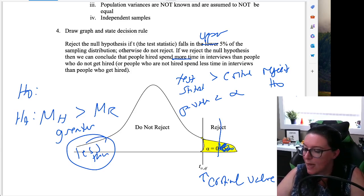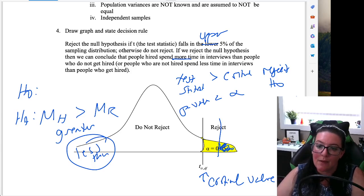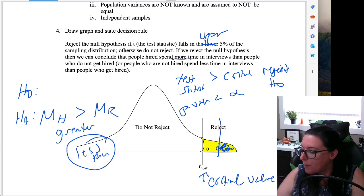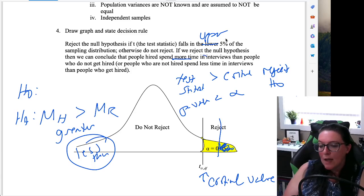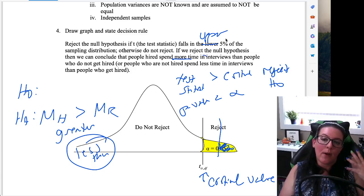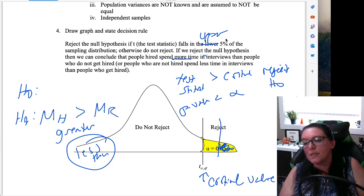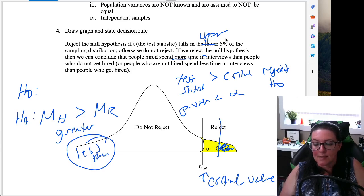Okay, alternatively, if we had phrased this as those who are rejected spend less, then we would do lower 5%, and then we would say people who are not hired spend less time in interviews, and then we have a lower left-tailed test. So in this case, if hired is more than rejected, we're looking at the upper 5%, otherwise, do not reject. And then we can conclude that people hired spend more time in interviews. So you always want to translate the test to what you ultimately come up with. So what we're going to do is we're going to go through a number of different tests and follow these steps through each of them as we code the test statistics and do the hypothesis testing in Excel or Python.